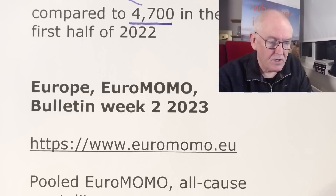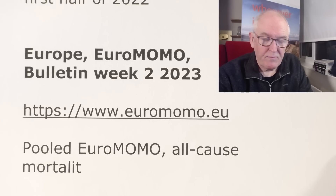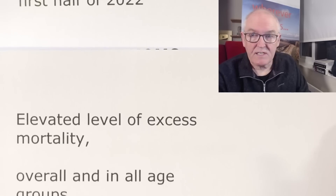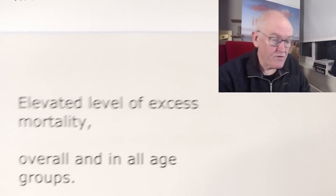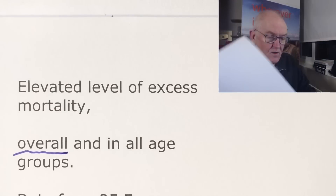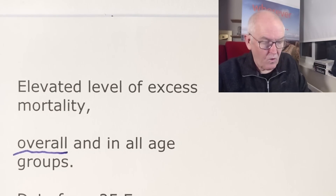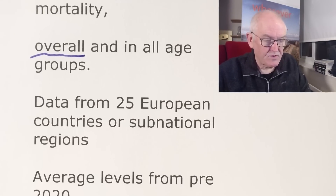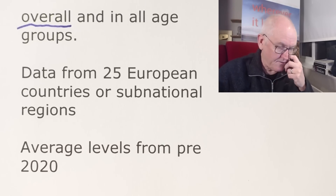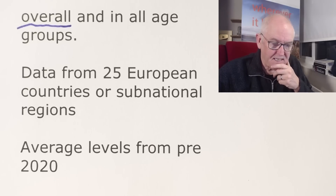We've also looked at Euro Mono data. Pooled Euro Mono all-cause mortality data showed elevated levels of excess mortality overall — in all areas. This consistency, remember, is the Bradford Hill criteria. We're seeing it in all age groups and in data from 25 European countries and sub-national regions, compared to average levels from pre-2020. We are actually seeing this everywhere.